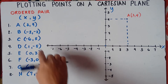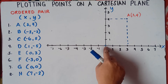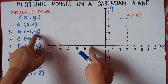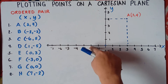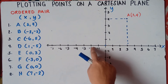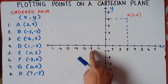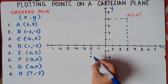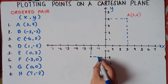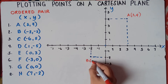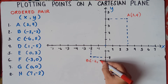For point B, x is negative 2. Starting from the origin, since it's negative 2 you move 2 units to the left — 1, 2. And since y is also negative 2, you move downwards 2 units — 1, 2. Make broken lines to guide you, and label the point: B is (-2, -2).